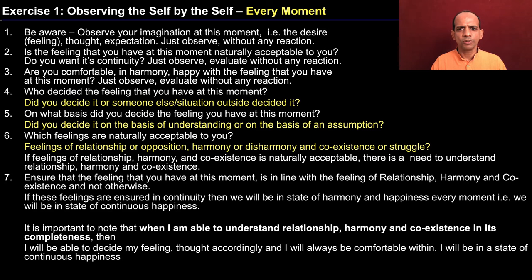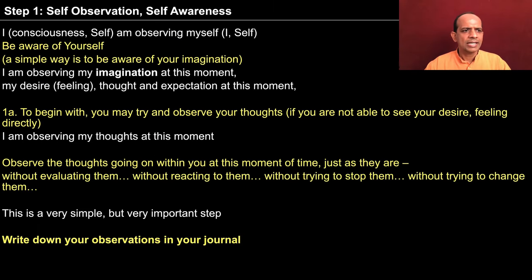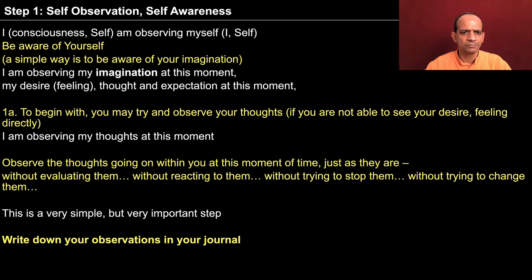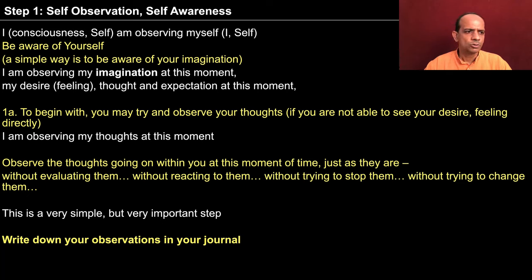These are the seven steps included in exercise one and we are going to look at step one. Step one is that I have to be aware of the self — I have to be aware of the imagination and observe it. I, that is the consciousness, am observing myself. I am the seer and I am the scene. A simple way to be aware of yourself is to be aware of your imagination.